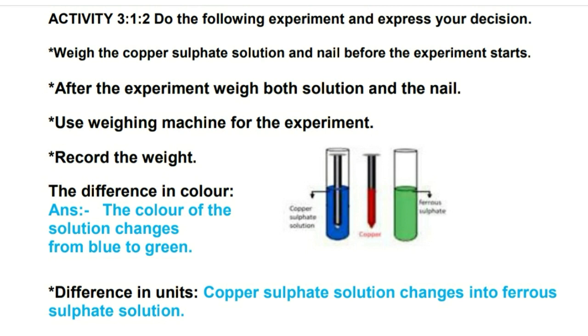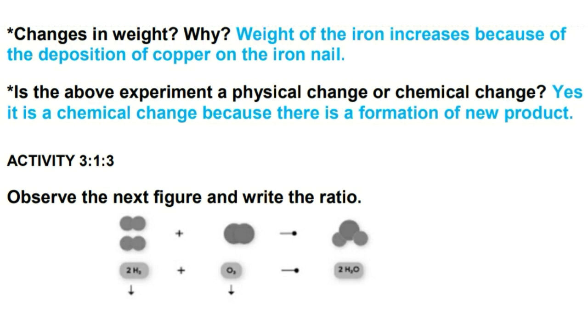Then the difference in units: in the beginning the solution was containing copper sulfate, but after the experiment the copper sulfate solution changes into ferrous sulfate solution. In weight, the weight of the iron increases because of the deposition of copper on the iron nail. Next question: is the above experiment a physical change or chemical change? It is a chemical change because there is formation of new product, that is ferrous sulfate.